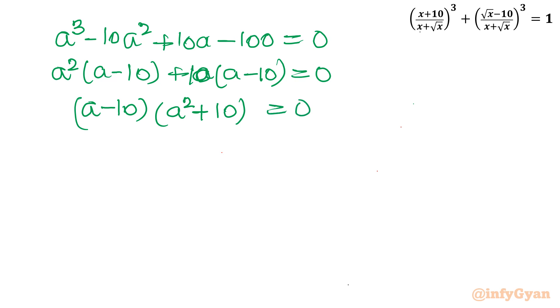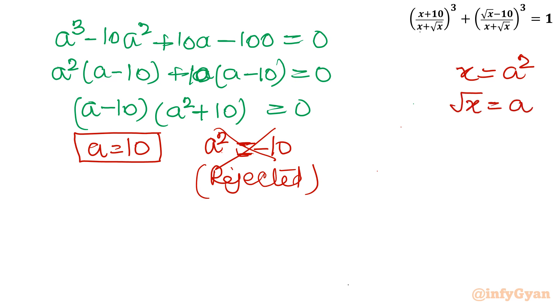Now you can see from here a = 10 is acceptable. But once you write a² = -10, rejected because we need real solutions. Now what was our substitution? x was a², so √x was a. Let us put: √x = 10. So x will become, squaring both sides, 100.